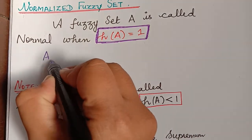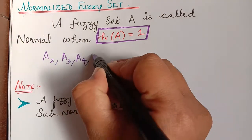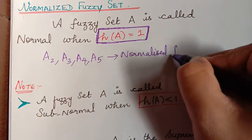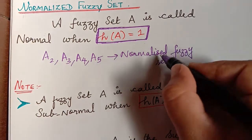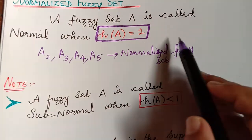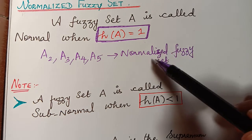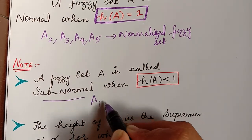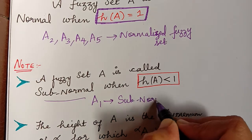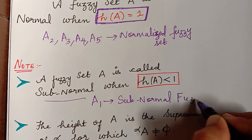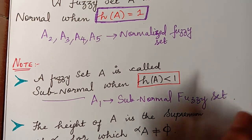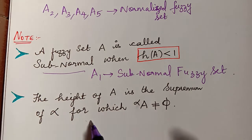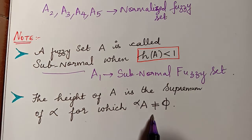So A2, A3, A4 and A5 are normalized fuzzy sets, and A1 is a subnormal fuzzy set. The spelling can be normalized or normalised — both are correct and can be used. The height of A can also be stated as the supremum of alpha for which the alpha cut of A is not equal to an empty set.